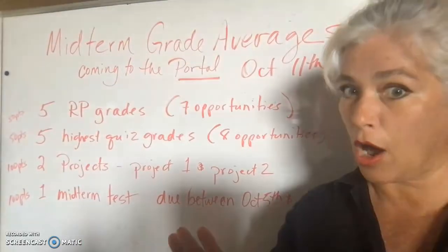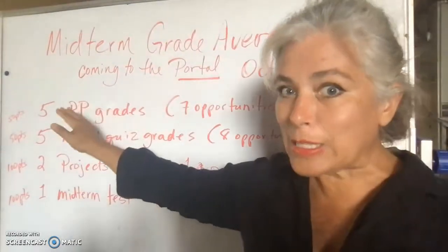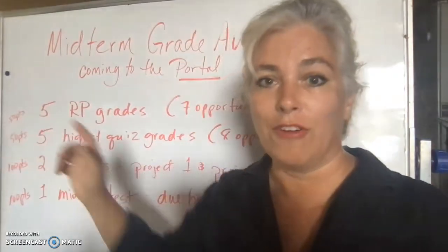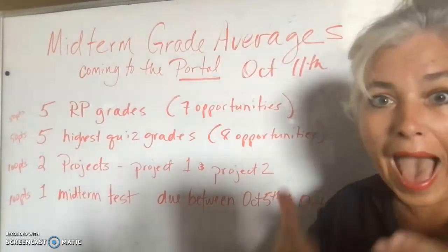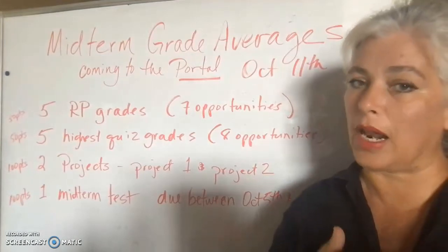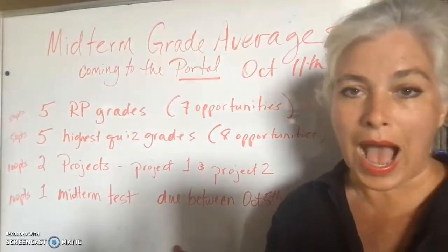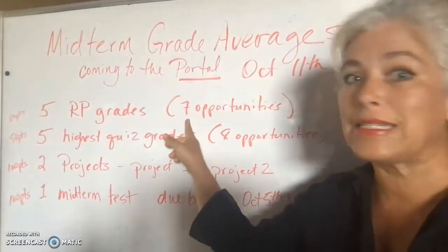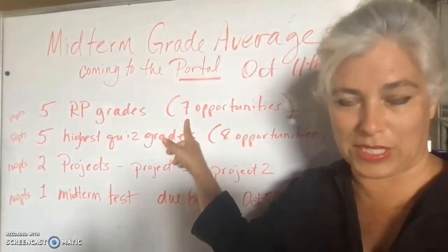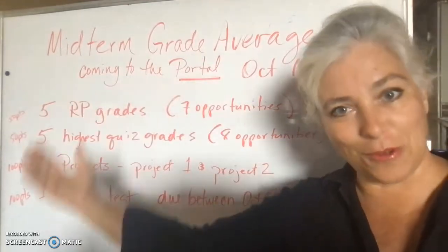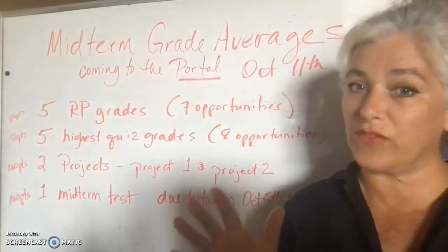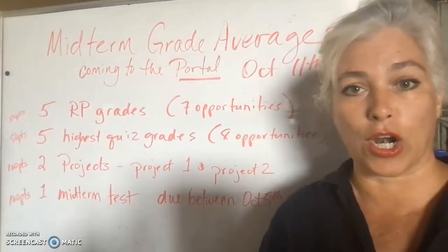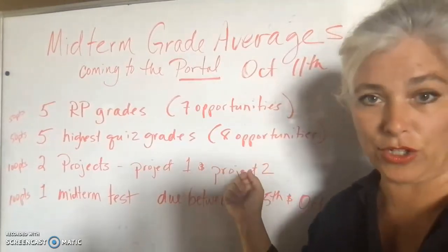Between now and the end of the midterm period — which I'm going to refer to as October 10th — I'm going to use 50 points for your midterm average. Since you get 100 points from reaction papers for the whole semester, I'm going to use 50 as the standard for the midterm grade average. Some of you are going to have as many as 70 points by that time, but I'm not going to use all 70 at midterm — we'll wait to use that extra 20 at the end of the semester.